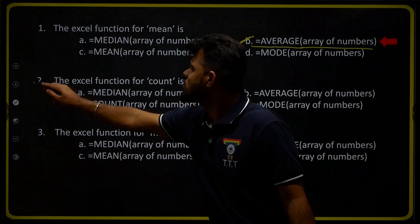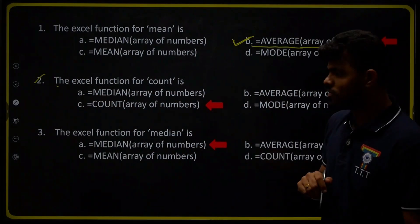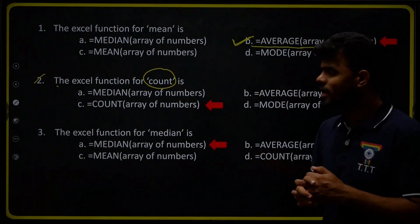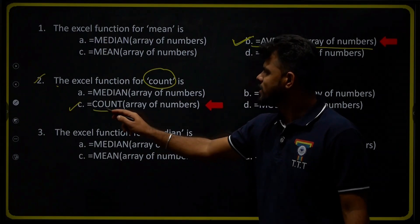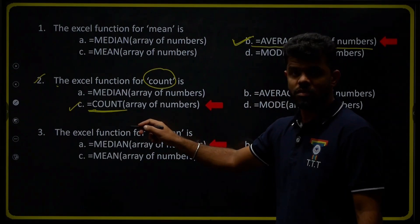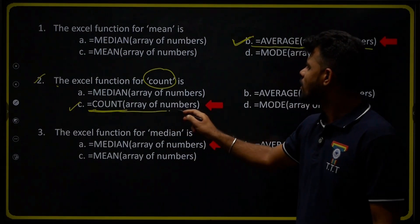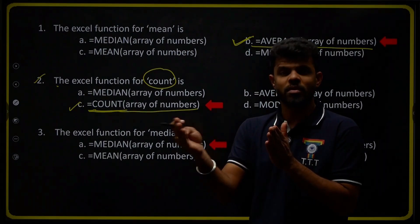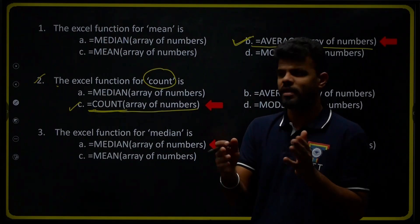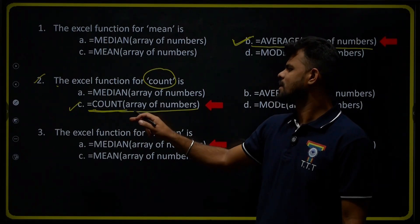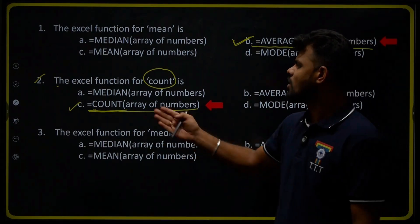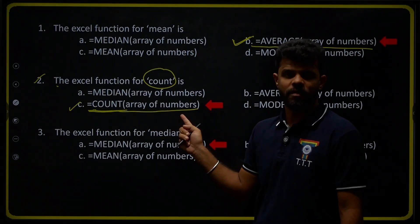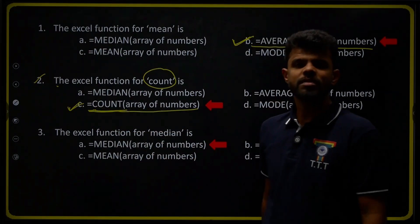Question number two: the Excel formula used for COUNT — to count the number of cells. We will use option C, that is =COUNT(array of numbers). We will not use the MEDIAN, AVERAGE, or MODE formulas. Only =COUNT(array of numbers) is used for counting cells. Therefore option C is the right answer.